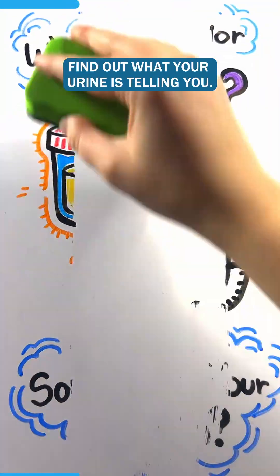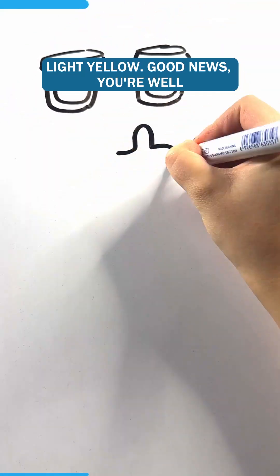Let's find out what your urine is telling you. Light yellow, good news, you're well hydrated.